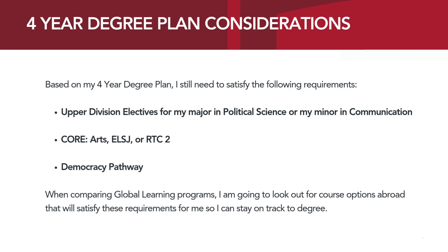Based on my four-year degree plan, I still need to satisfy the following requirements at SCU: Upper Division electives for my major in Political Science or my minor in Communication, Core Arts, ELSJ or RTC2, and a class for my Democracy Pathway. When comparing global learning programs, I'm going to look out for these types of course options that will satisfy these requirements so I can stay on track to degree.